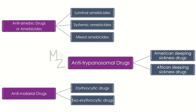Anti-amoebic drugs are also called amoebicides. They are further classified as luminal, systemic, or mixed amoebicides. Luminal amoebicides act on the parasite in the lumen of the bowel — the intestine — whereas systemic amoebicides are effective against amoebas in the intestinal wall and liver. Mixed amoebicides are effective against both luminal and systemic forms of the disease.